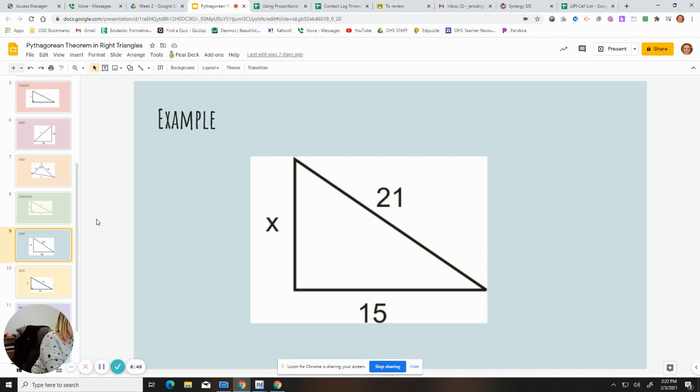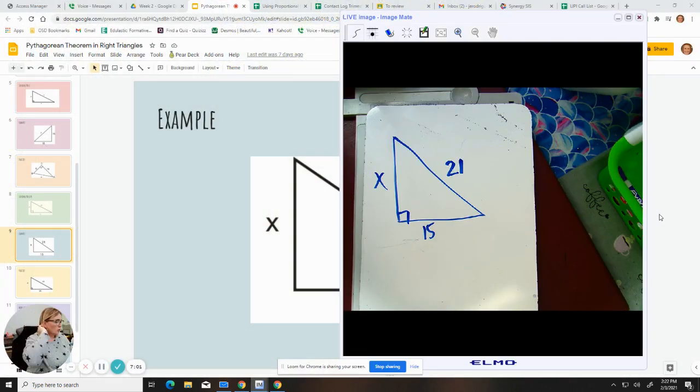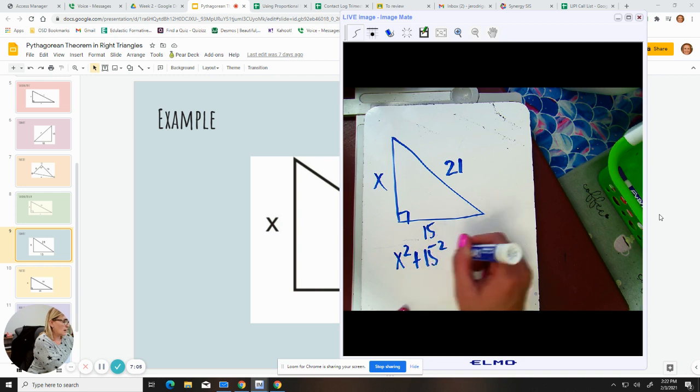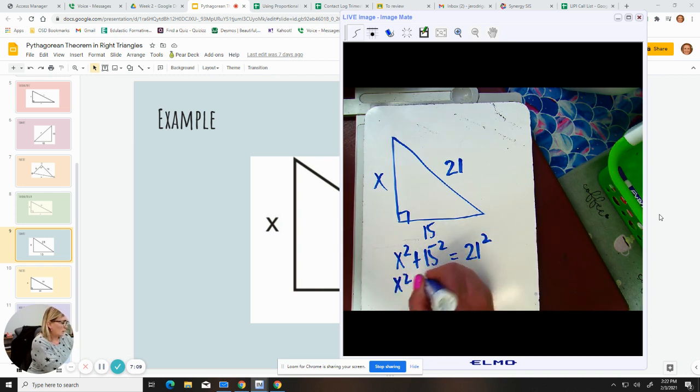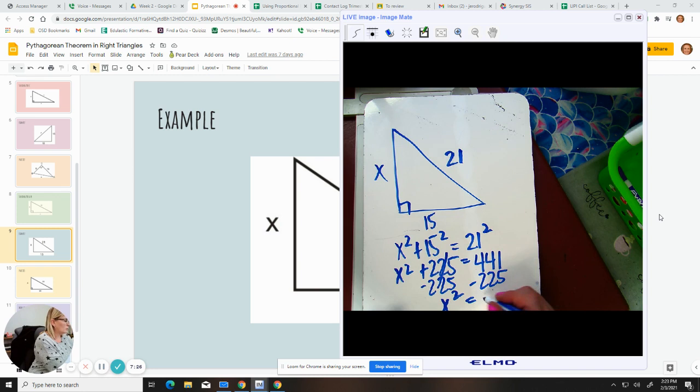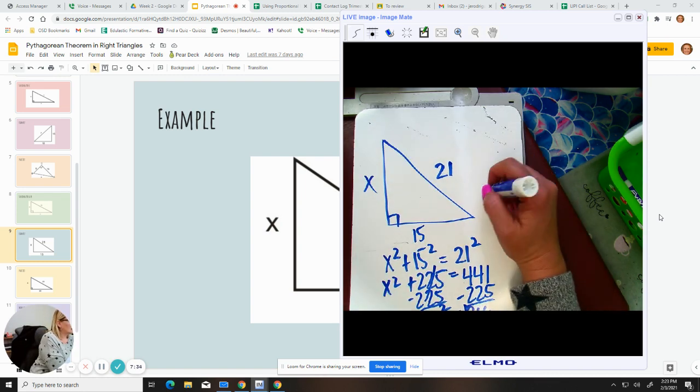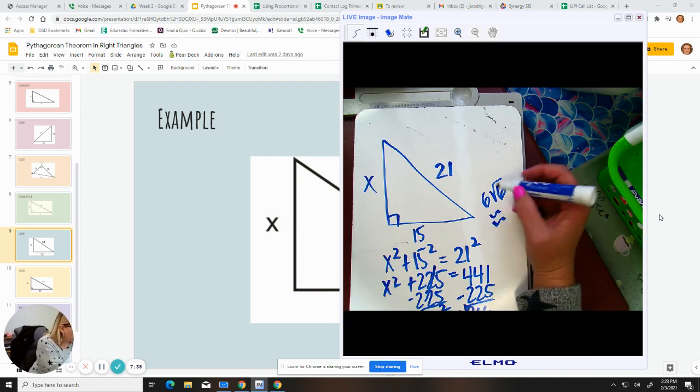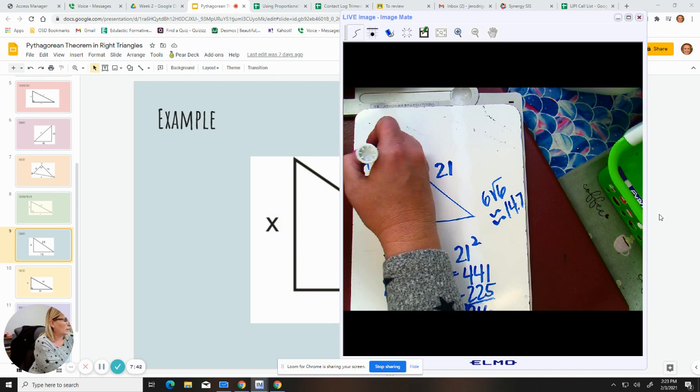So here's another one. We're going to do the exact same thing. Notice the x on this one is on a different part of the triangle, but it doesn't matter because we're interchangeable with A and B. So we're going to just say x squared plus 15 squared equals 21 squared. x squared plus 225 equals 441. We're going to subtract 225. x squared is equal to 441 minus 225, which is 216, square root that. And again, we get like six square root of six, but we're going to simplify that into 14.7. So this is 14.7.